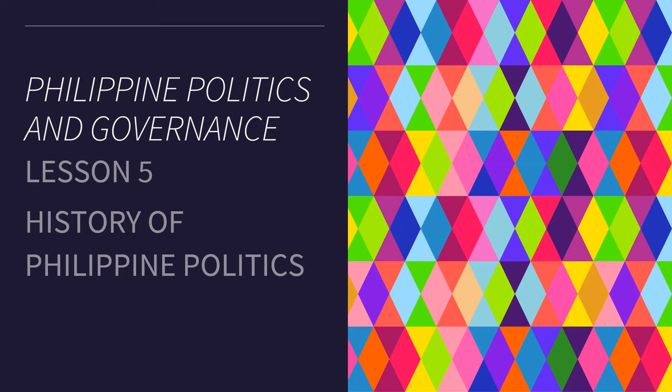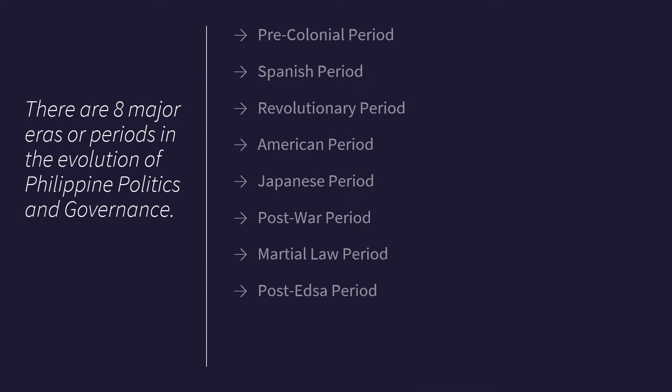Hello and welcome to Philippine Politics and Governance. I am Armin Rose and I will be your guide as you learn the concepts of this course. This is Lesson 5: History of Philippine Politics. There are eight major eras or periods in the evolution of Philippine politics and governance: pre-colonial period, Spanish period, revolutionary period, the American period, the Japanese period, the post-war period, the martial law period, and the post-EDSA period.